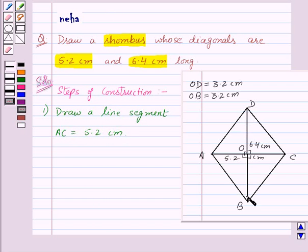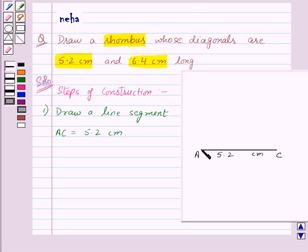Now, we know that BD is perpendicular bisector of AC. So, let's draw the perpendicular bisector of AC. For that, first of all, put your compass at point A.